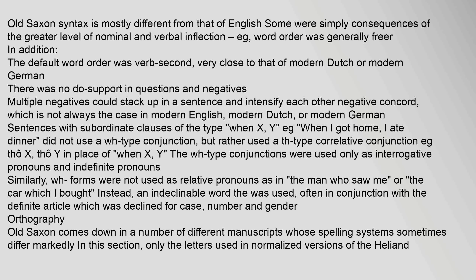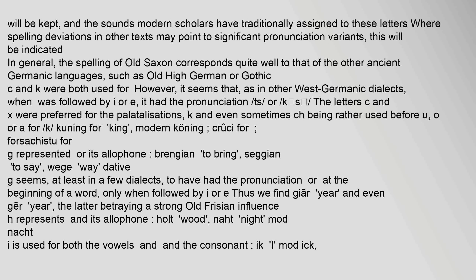Old Saxon syntax is mostly different from that of English, some differences simply being consequences of the greater level of nominal and verbal inflection. The spelling of Old Saxon corresponds quite well to that of other ancient Germanic languages such as Old High German or Gothic. Both C and K were used for the same sound; however, when followed by I or E, it had the pronunciation ts or ks, and the letters C and X were preferred for these palatalizations. K and sometimes CH were used before U, O, or A — for example, 'kuning' for king (modern Dutch: koning).